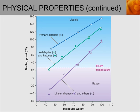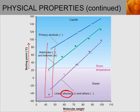A graph also shows this same pattern. On the x-axis we have molecular weight increasing left to right, and on the y-axis boiling points increase going up. Alkanes are on the bottom, and for a given molecular weight, aldehydes have much higher boiling points due to slightly stronger intermolecular forces. Alcohols are at the very top with even greater boiling points due to their stronger hydrogen bonds.